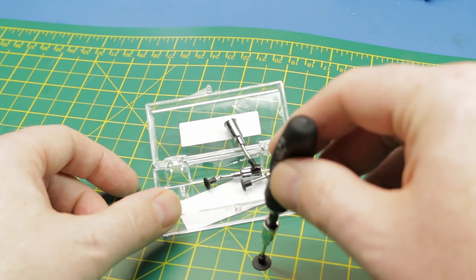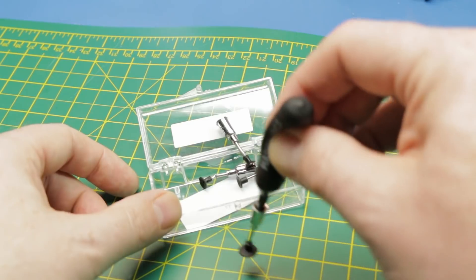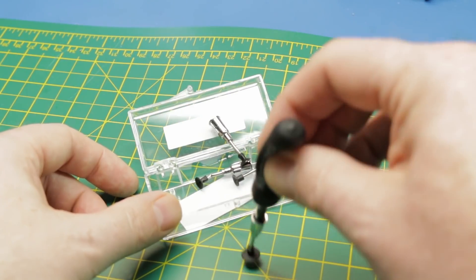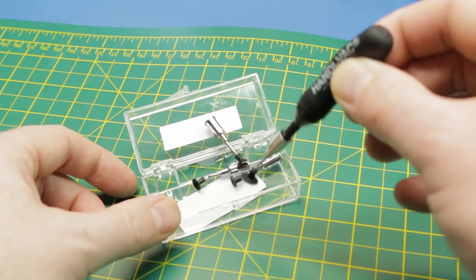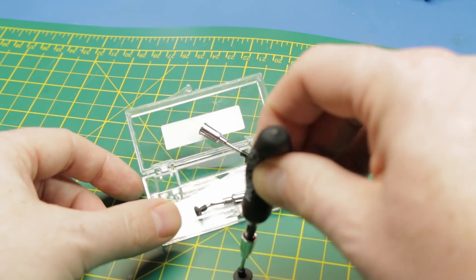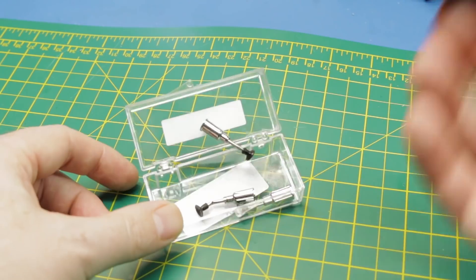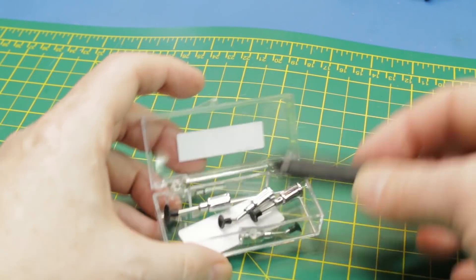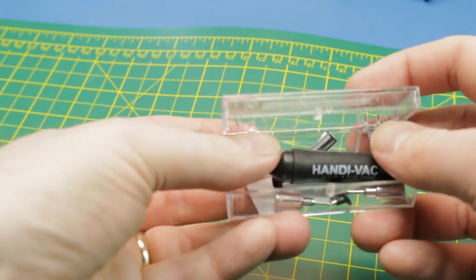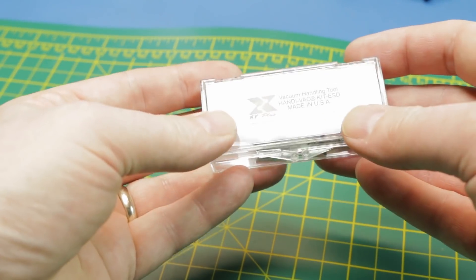But basically, we can pick up our SMD components and actually, that actually seems to work pretty reasonable. We can pick up our components and then set them down on our solder paste on our SMD board. But we'll see this in an upcoming video and just see how it works. These things don't cost much on eBay. I might add it to the store if it works out well.